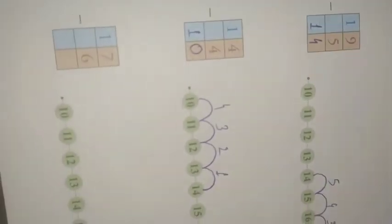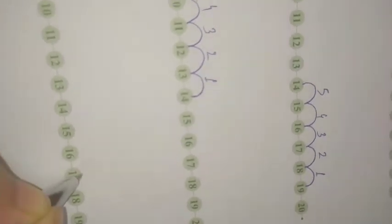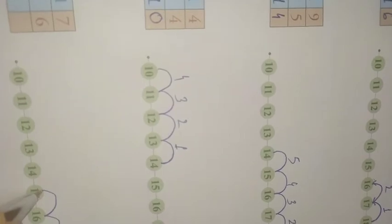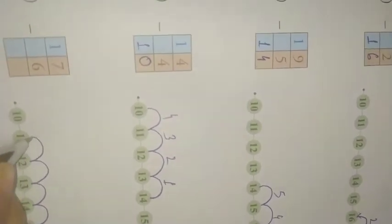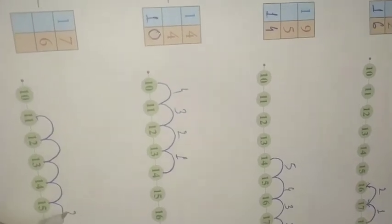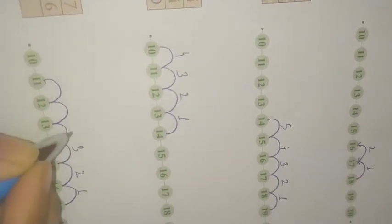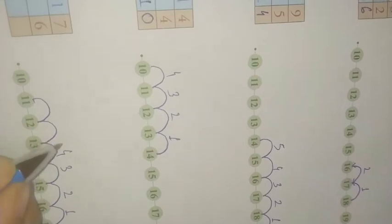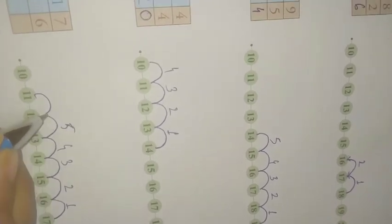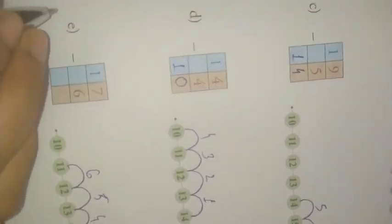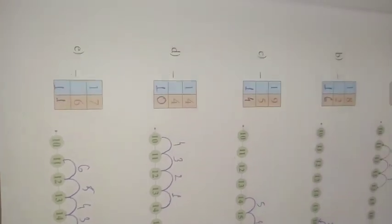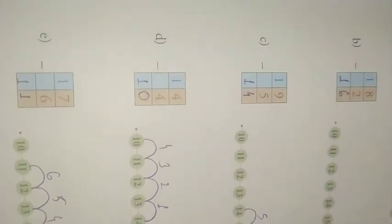Now 17 minus 6. You have to start from 17 and count backward 6. 1, 2, 3, 4, 5, 6. Now 17 minus 6 is equal to 11. You reach 11. So the answer is 11. Understood? Thank you.